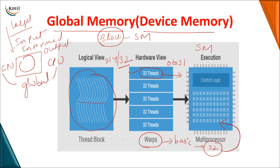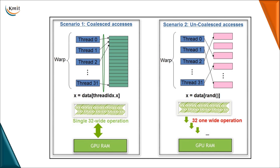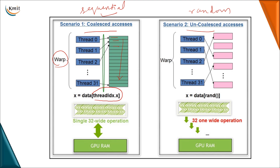The 32 threads of a warp are executed on your streaming multiprocessor and require data from global memory. With global memory, you must be precise about coalesced and uncoalesced access. In coalesced access, all threads access data sequentially — thread by thread using threadIdx — so coalesced access is also known as sequential access. Uncoalesced access is random access, where each thread can take data from any memory location, which is why a random function is used.